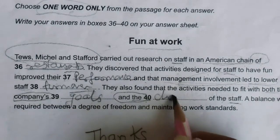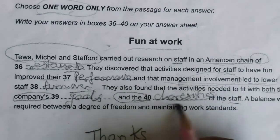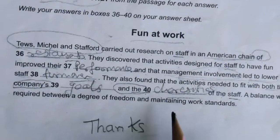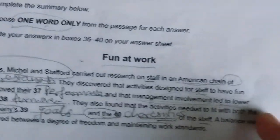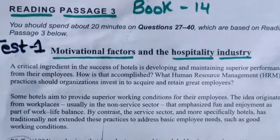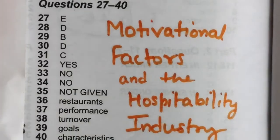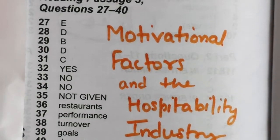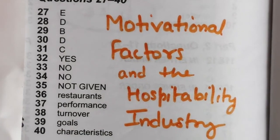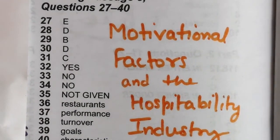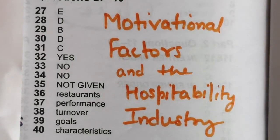The correct answer is 'goals and characteristics' — just keep the correct spelling when writing it on the answer sheet. Now we have completed this reading passage. Let's look at the answer keys. The answers for 'Motivational Factors and the Hospitality Industries' — this is Reading Passage 3, questions 27 to 40. These are the answer keys.